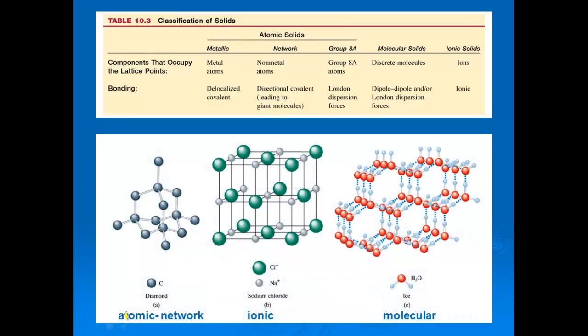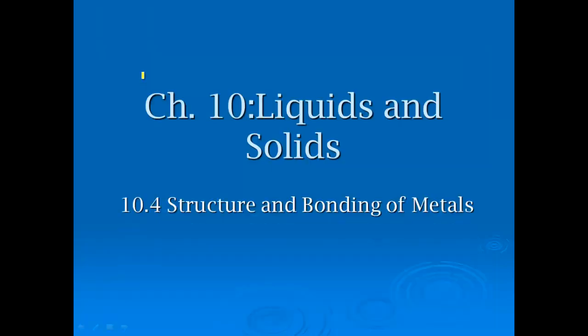This is just showing you some schematics. This is atomic network. This is diamond. Each one of these represents carbon. It's a very special example. Ionic, you've got ions. And molecular, those are water molecules. And the dots between all of those are the hydrogen bonding that's holding them together. And this chart, which is in your book, can also be found, it kind of summarizes everything, all in one page, where you've got the bonding, and you've got the lattice points.